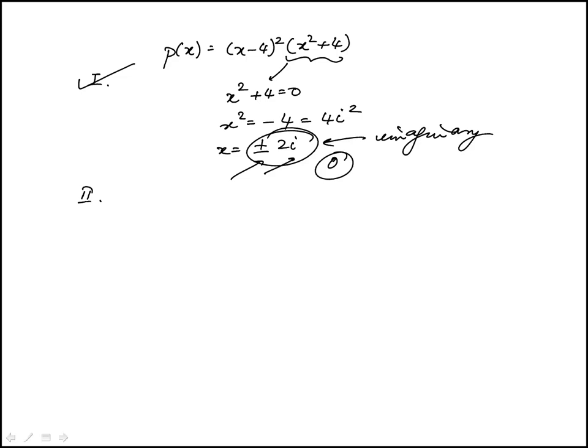Statement two says the polynomial has no real roots, but actually this piece will give you a real root: x = 4. It has a multiplicity of 2, meaning it appears twice. So two is out.